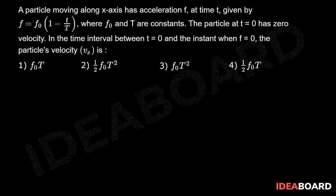The particle at t equals 0 has velocity 0. In the time interval between t equals 0 and the instant when f equals 0, the particle's velocity vₓ is what we need to find.